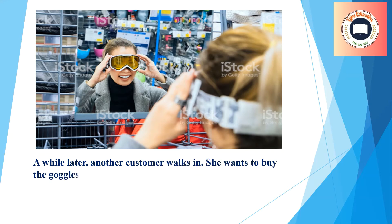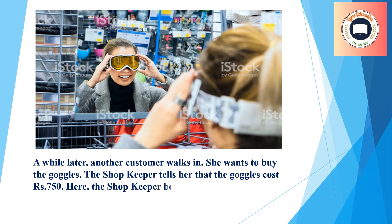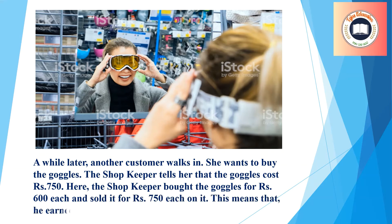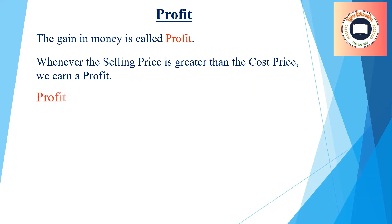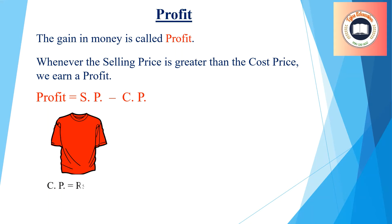A while later, another customer walks in. She wants to buy the goggles. The shopkeeper tells her that the goggles cost Rs. 750. Here the shopkeeper bought the goggles for Rs. 600 each and sold it for Rs. 750 each, meaning he earned Rs. 150 on it. Profit: The gain in money is called profit. Whenever the selling price is greater than the cost price, we earn a profit. Profit = SP − CP. The cost price of the t-shirt is Rs. 400 and the selling price is Rs. 450, so profit = 450 − 400 = Rs. 50.